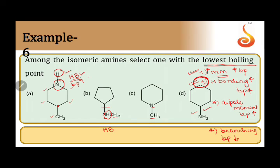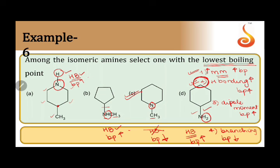In option C, the nitrogen is not directly attached to any hydrogen, so there is no hydrogen bonding and therefore the boiling point is lower. In the last example, there are two hydrogens attached to nitrogen directly, so hydrogen bonding is quite high and boiling point is also quite high. We need to select the compound with the least boiling point, so the answer is option C — it has no hydrogen bonding and will have the least boiling point.